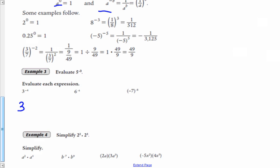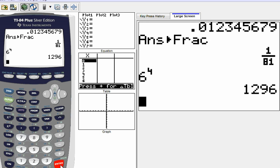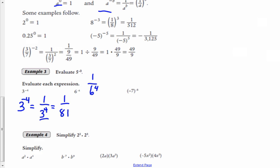So 3 to the negative fourth, we're going to do by just doing 1 over 3 to the positive fourth. And then we're going to simplify 3 to the fourth in the denominator. 6 to the negative fourth is 1 over 6 to the positive fourth. And I'm going to need my calculator to do 6 to the fourth. That's 1,296. So to get rid of this exponent here in the denominator, I'm going to write 1,296. So that's my answer to that one.